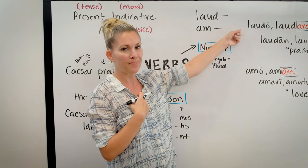'They praise the sailor' — now I change to third person plural. Third person plural ending is NT. Stem LAUD + A + NT = laudant. So natam laudant means 'they praise the sailor.' Hopefully that shows how to conjugate a first conjugation verb in the present indicative active.